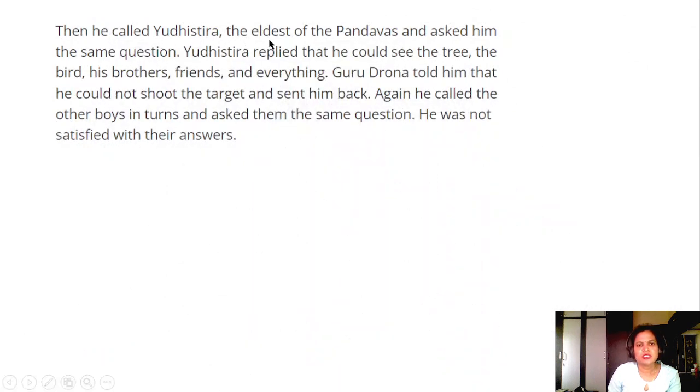And then he called Yudhishthira, the eldest son of Pandavas, and asked him the same question. Yudhishthira replied that he could see the tree, the bird, his brothers, friends, and everything. Guru Drona told him that he could not shoot the target and sent him back.